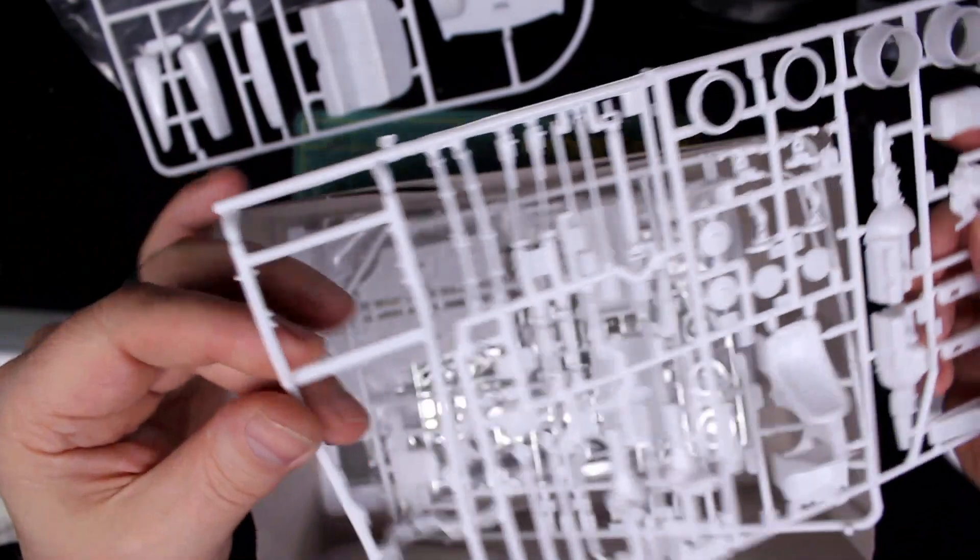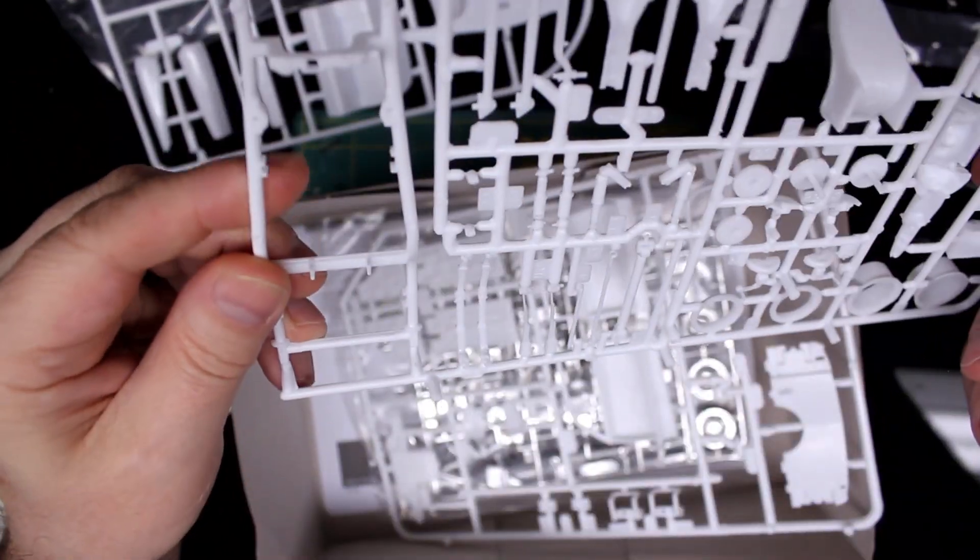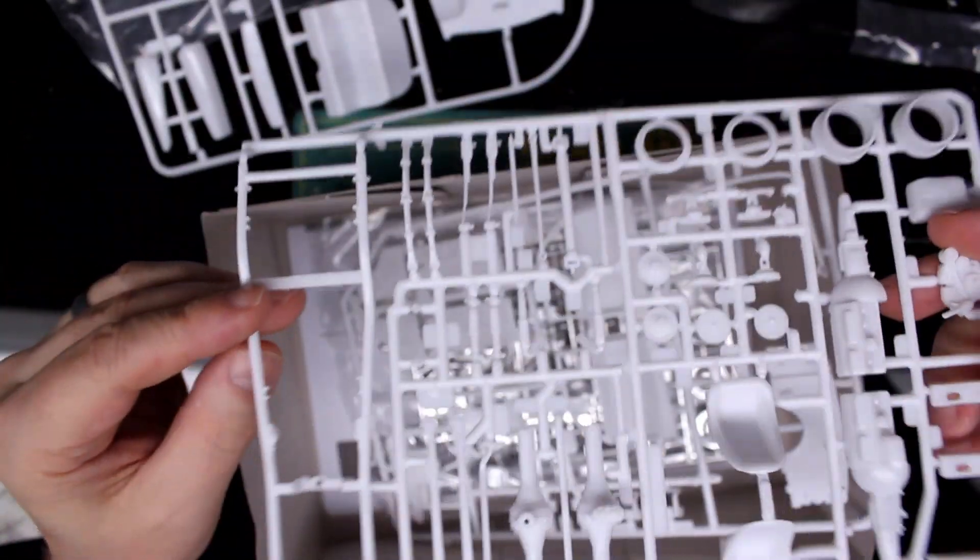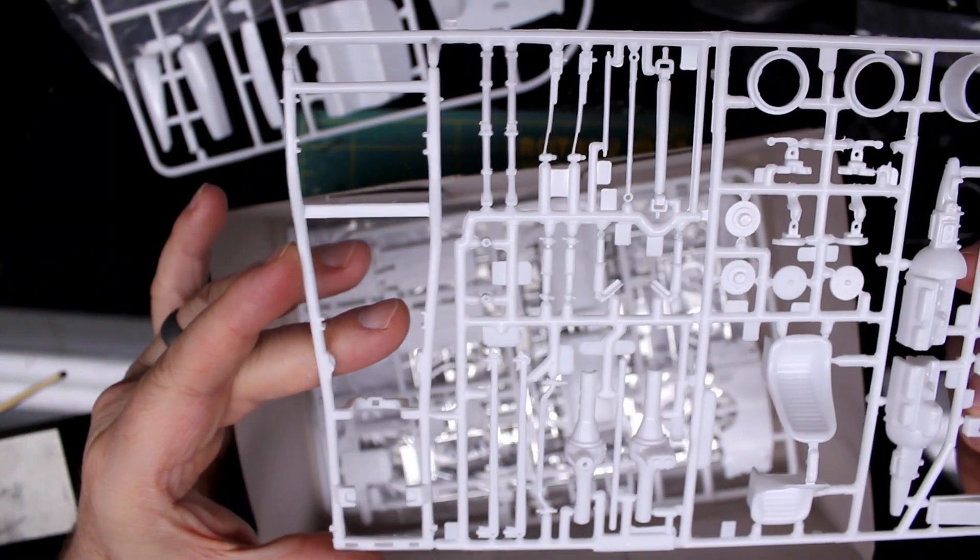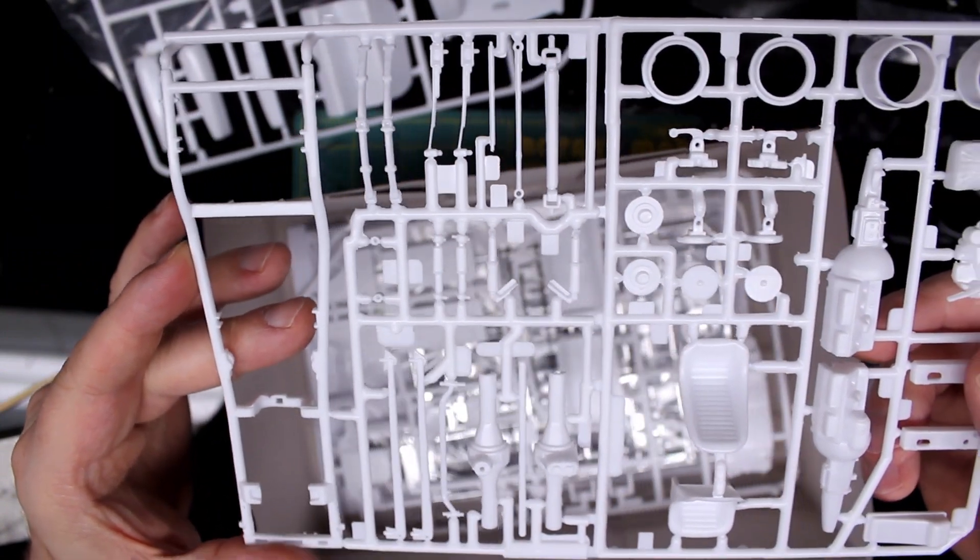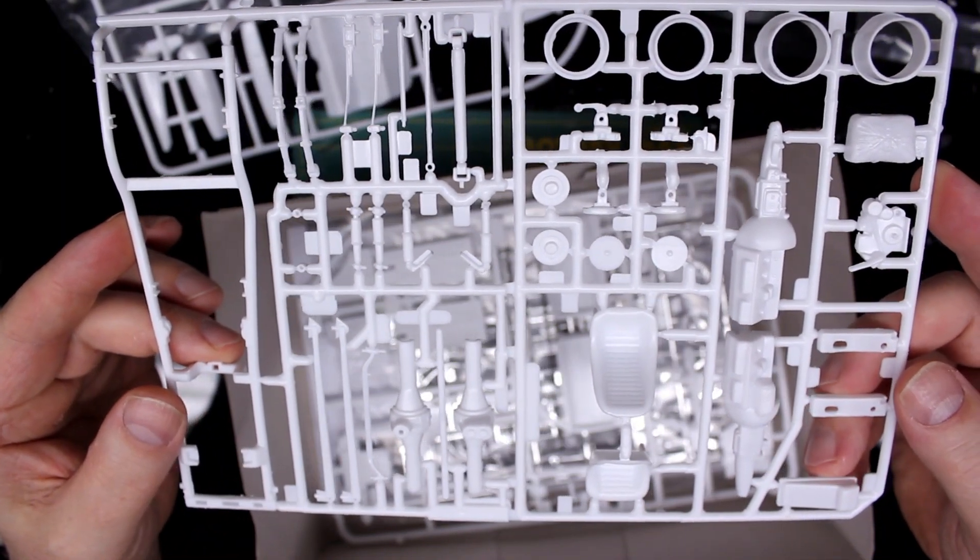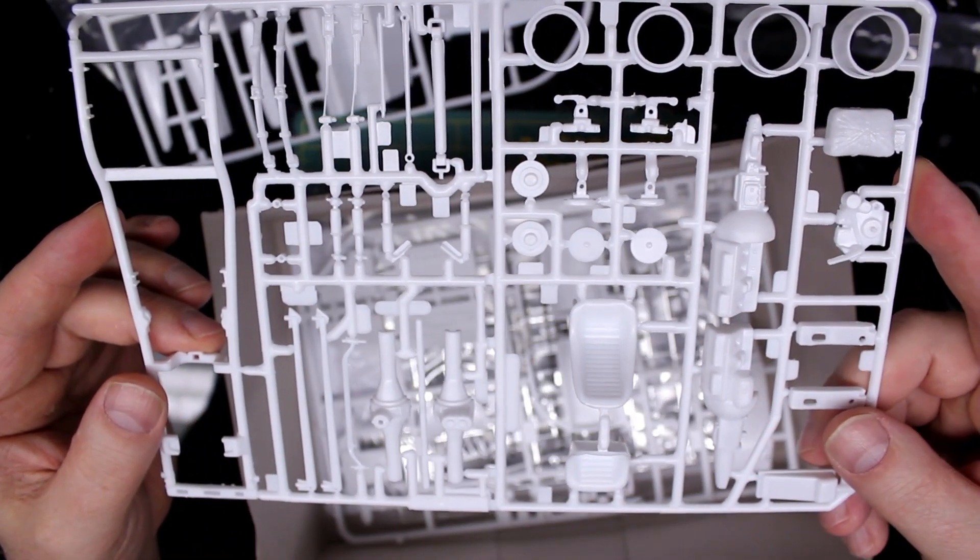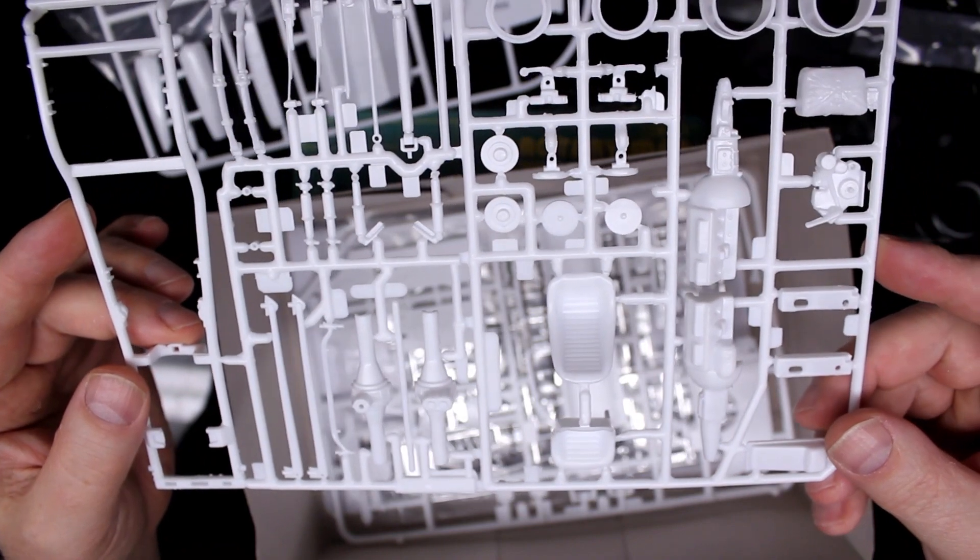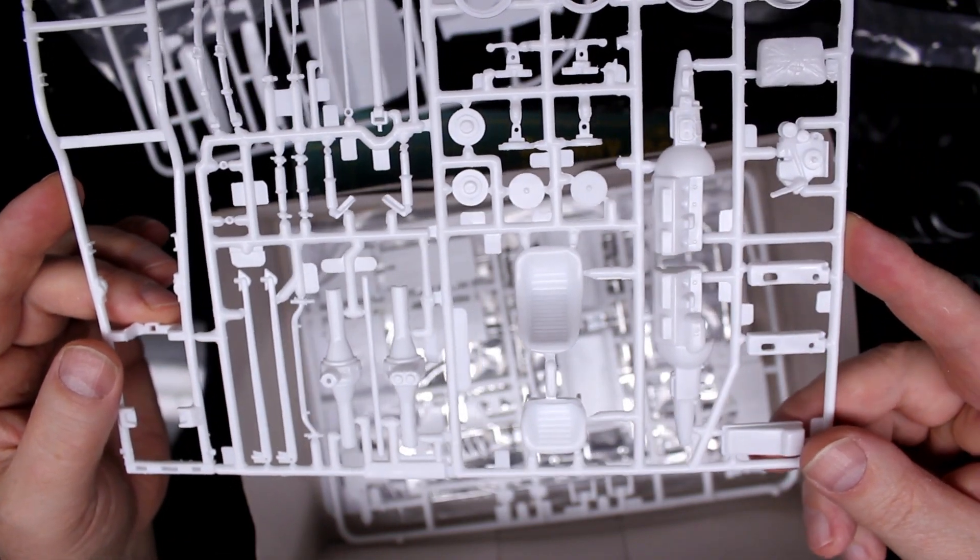We have the tubular frame. Engine parts. Wheel rims. Shocks. Differential bucket seats.